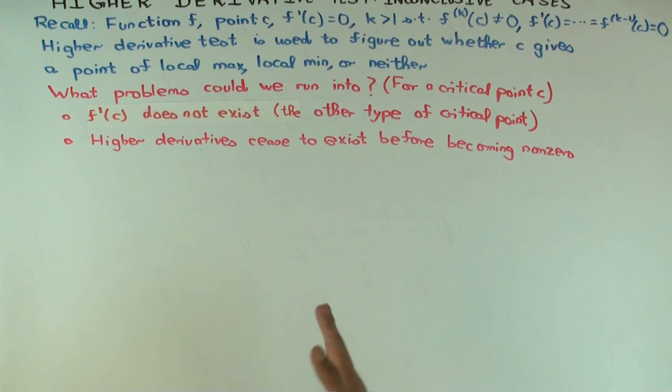So for instance, maybe the first three derivatives are zero, and then the fourth derivative doesn't exist.